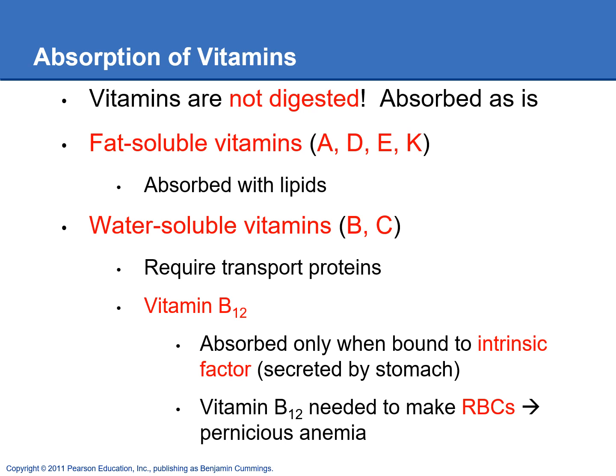Vitamin B12 specifically has to be bound to a protein called intrinsic factor, which is made by the stomach. If you don't make enough intrinsic factor, you can't absorb enough vitamin B12. Vitamin B12 is needed to make thymidine in DNA so red blood cells can divide properly; without it, you make fewer red blood cells than needed, resulting in large red blood cells that are few in number — this is pernicious anemia. This is seen more in the elderly because their stomach may not make enough intrinsic factor.